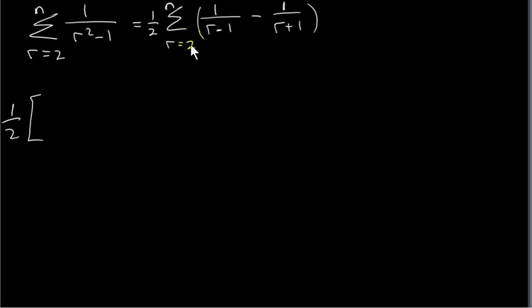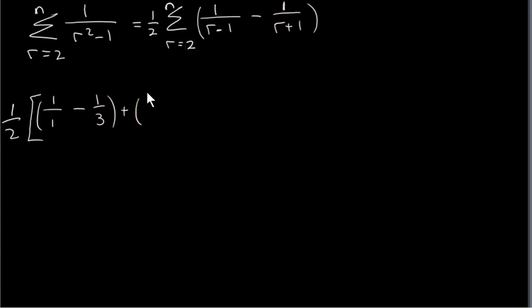We start off with r equals 2, plug 2 in for r, and we get 1 over (2 minus 1), which is 1, minus 1 over (2 plus 1), which is 3. Then we add on the second term, obtained by replacing r with 3. We put 3 in for r, so we get 1 over (3 minus 1), which is 1 over 2, minus 1 over (3 plus 1), which is 1 over 4.